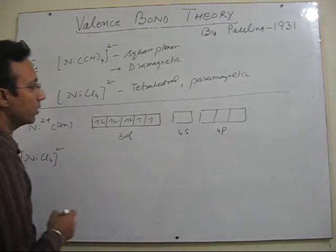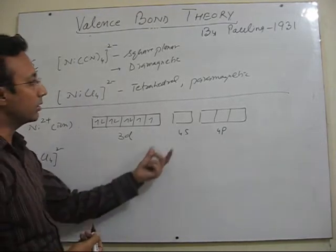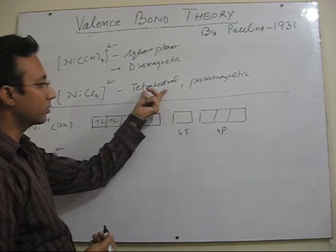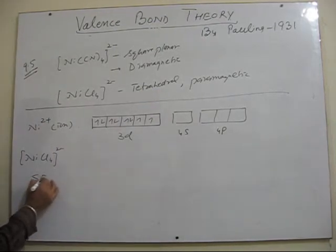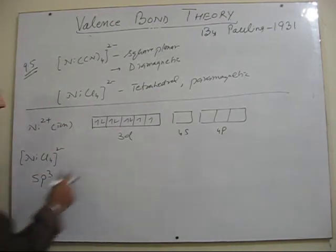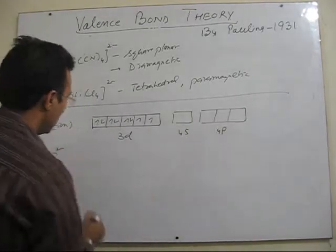Now you see it is very simple. It is given in the question that it is tetrahedral. So the hybridization will be SP3 in this particular case. So s and all p3 are empty.